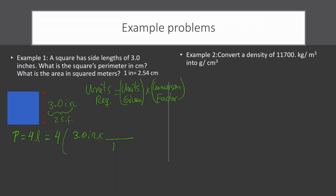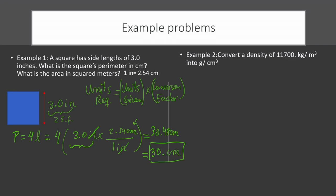We know that for every 1 inch there is 2.54 centimeters, and we put the same units in opposite top and bottom so that they eliminate. We are left with units of centimeters on top. After multiplying all the numbers, we get 30.48 centimeters. Now, we need two significant figures because our measured value is 3.0, which has two sig figs. So this needs to be rounded to 30. centimeters, which has two significant figures. That's our answer.